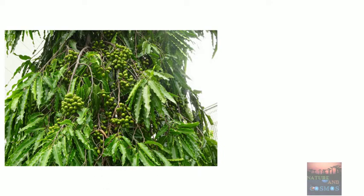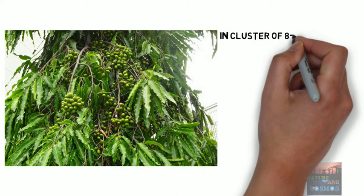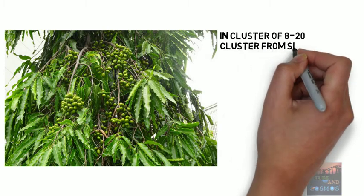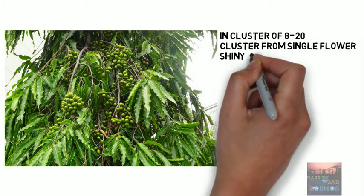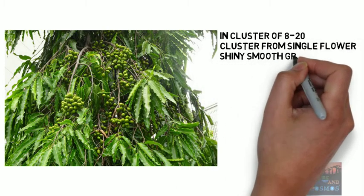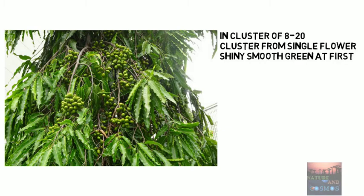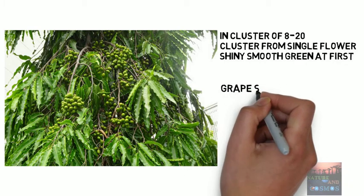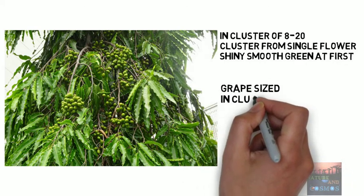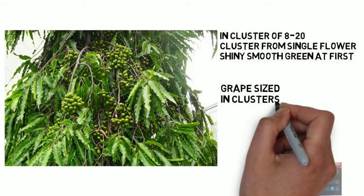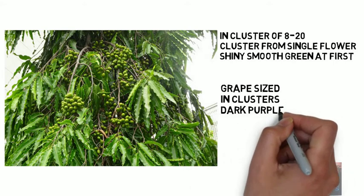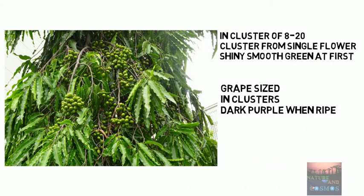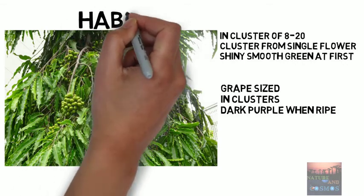The fruit is also formed in clusters of 8 to 20, growing from the end of a common stalk. The entire cluster is produced from a single flower. Each fruit is about the size of a small grape — shiny and smooth. It is green at first and turns deep purple as it ripens.